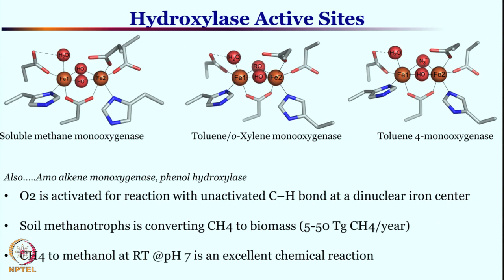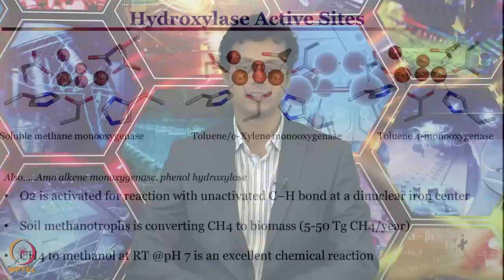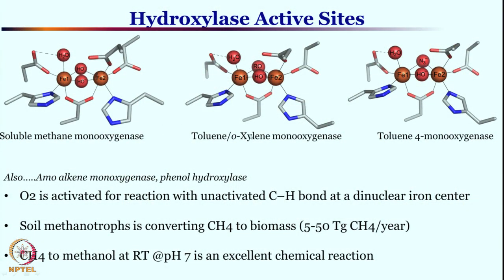You can have a series of other reactions, even aromatic hydroxylation reactions. For instance, one can take toluene and convert it to ortho-hydroxytoluene, meta-hydroxytoluene, or para-hydroxytoluene. So toluene or xylene as a substrate for the monooxygenase will be hydroxylated at this similar active site.